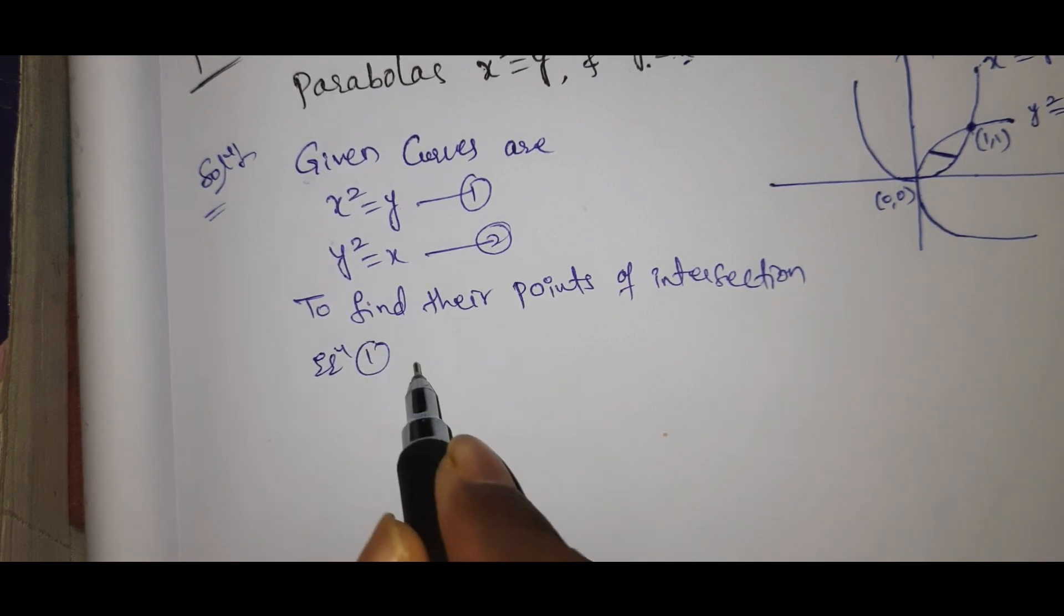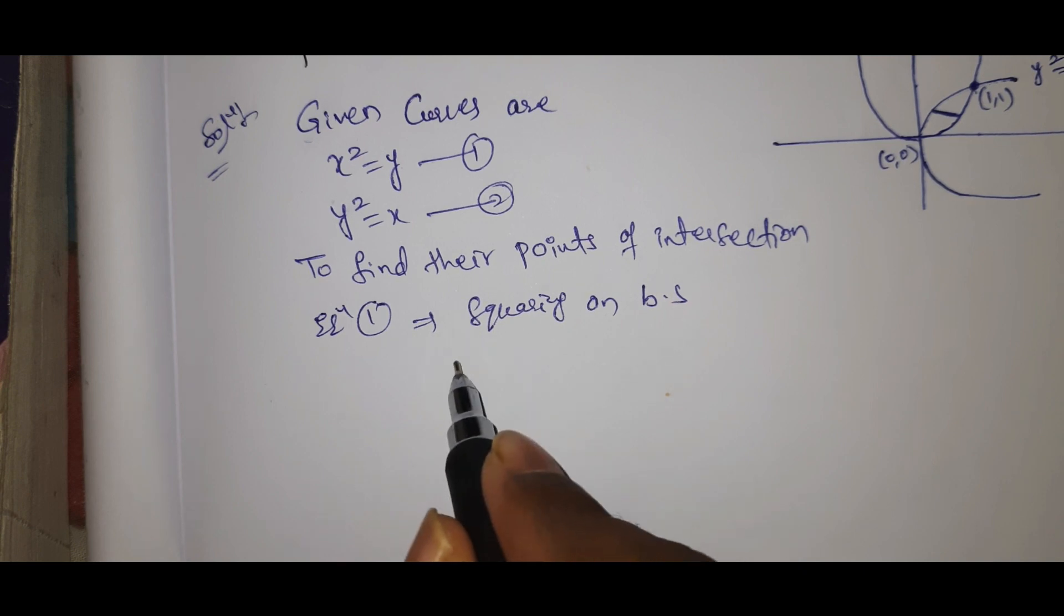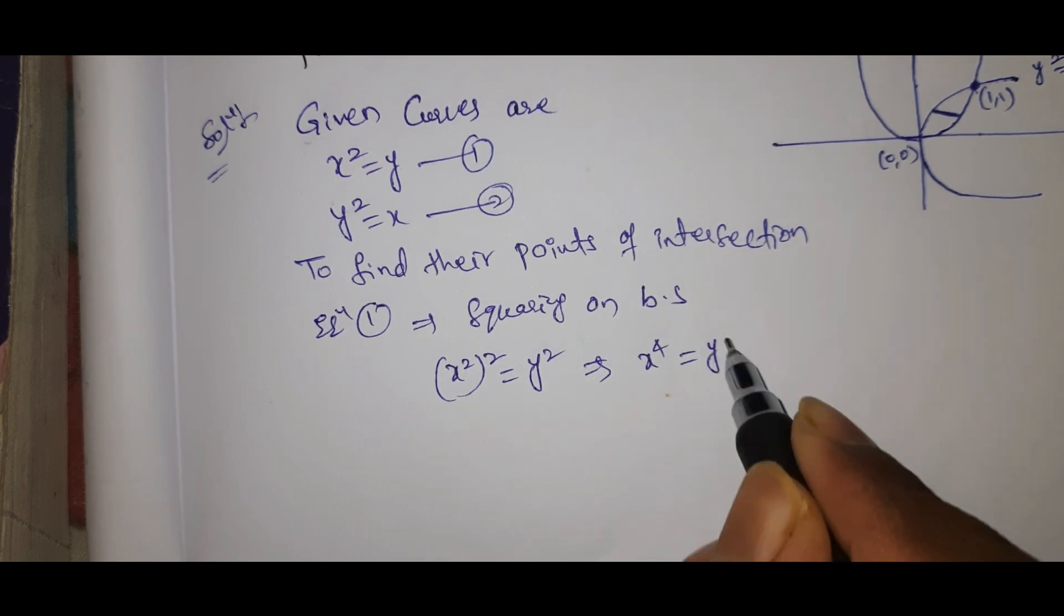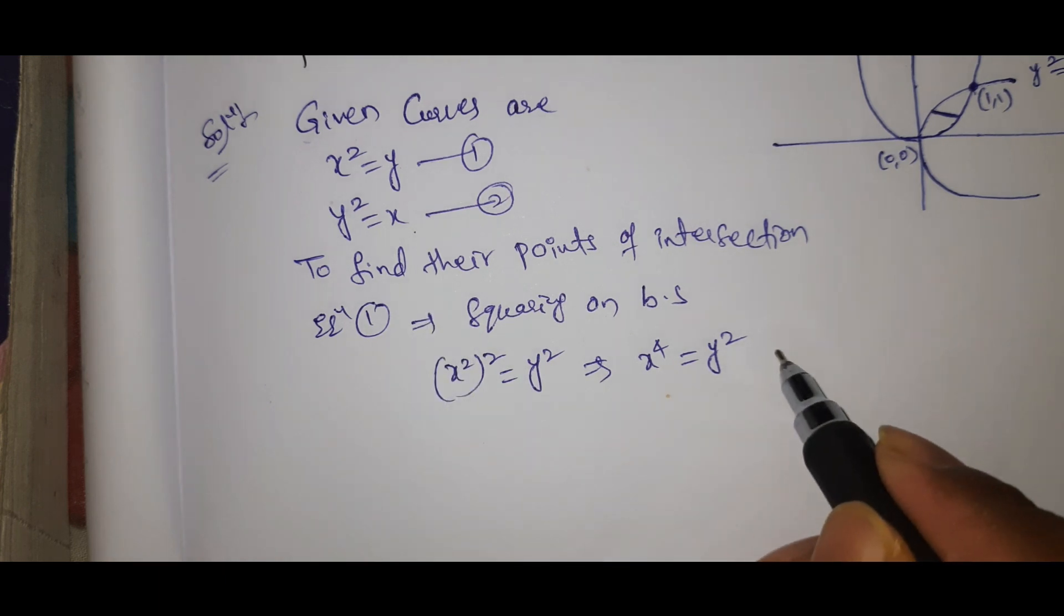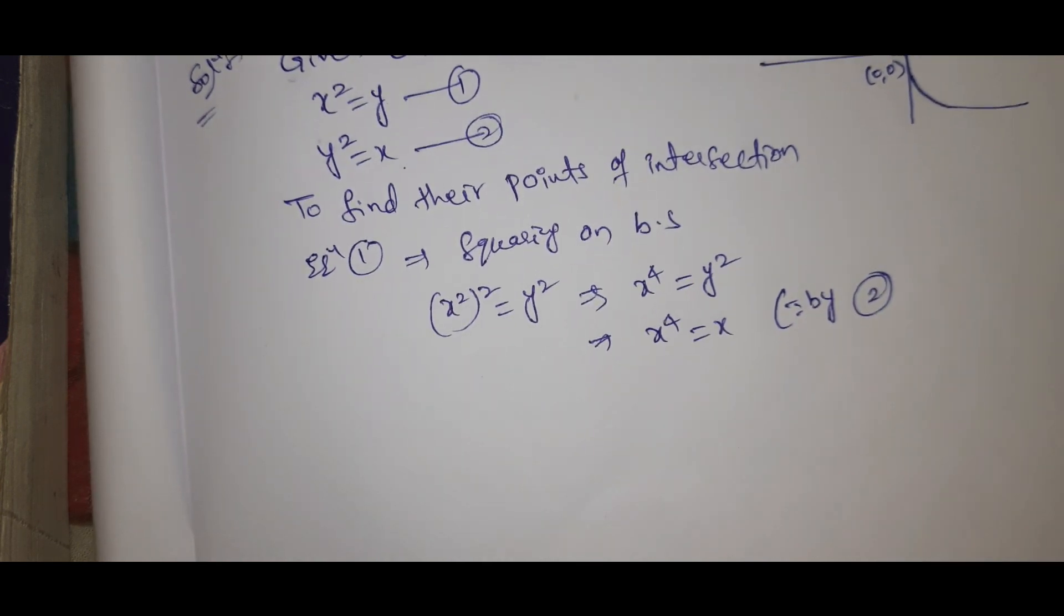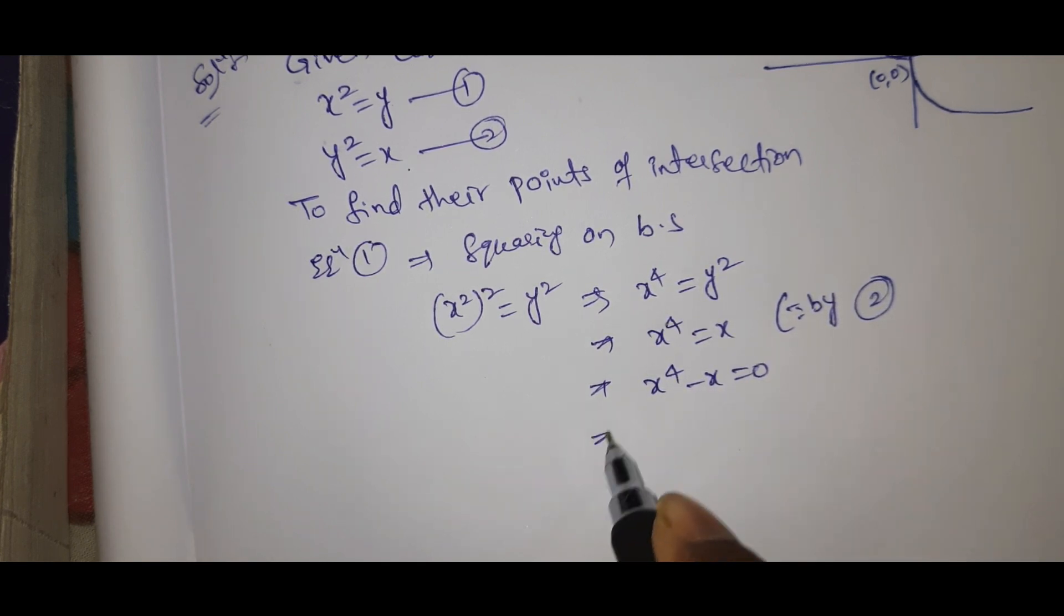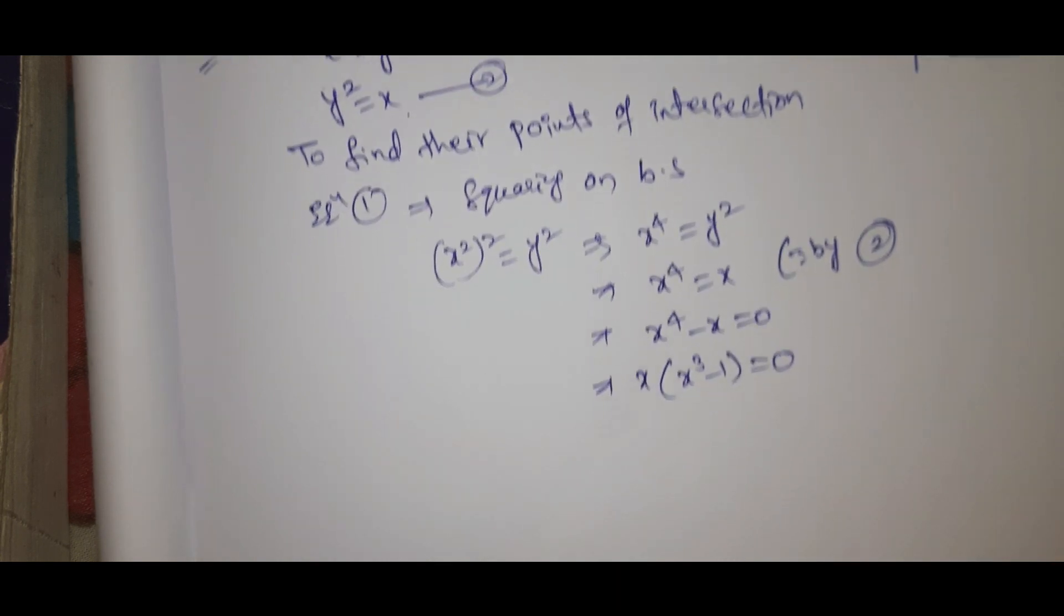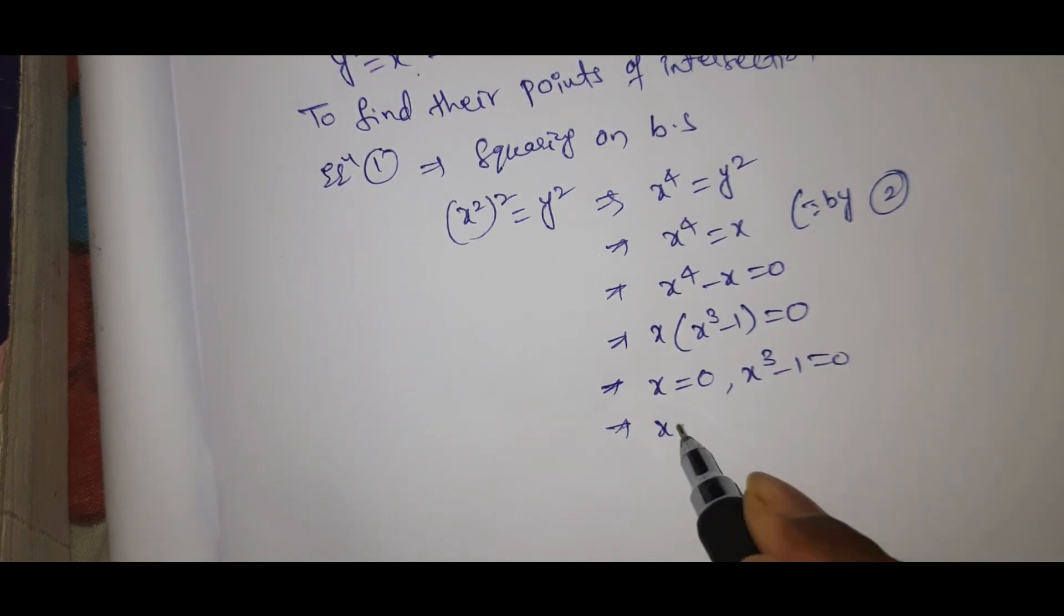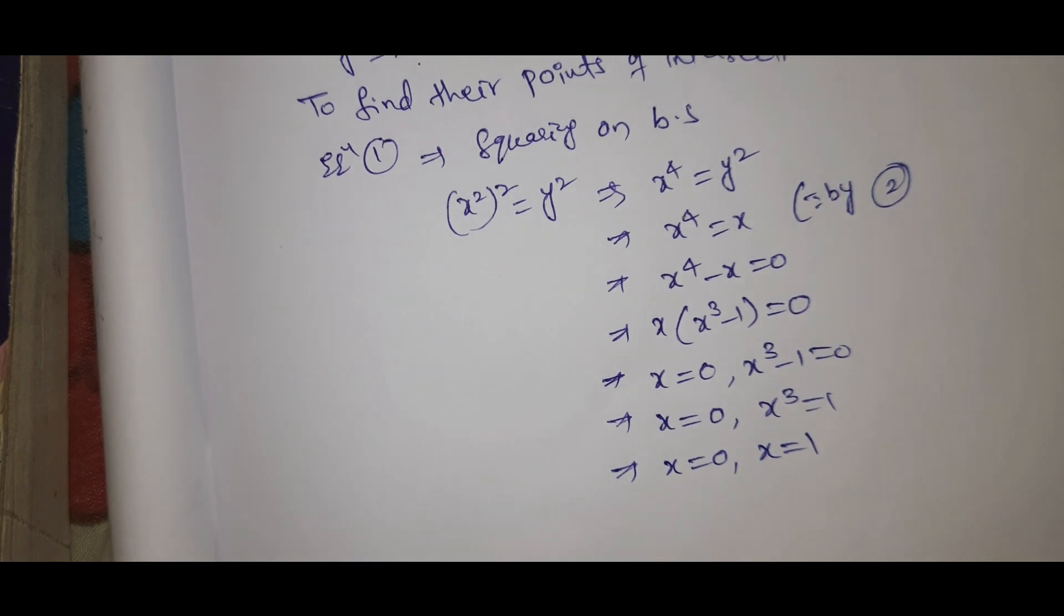Squaring on both sides of equation 1, we get (x²)² = y², which gives x⁴ = y². But y² = x from equation 2, so x⁴ = x. This gives x⁴ - x = 0. Factoring, x(x³ - 1) = 0, so x = 0 or x³ = 1, thus x = 0 or x = 1.